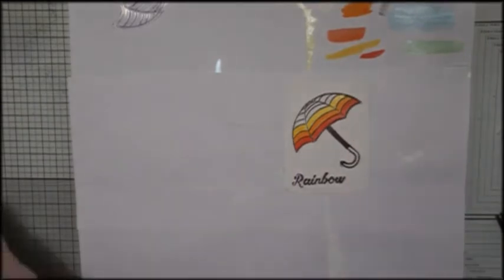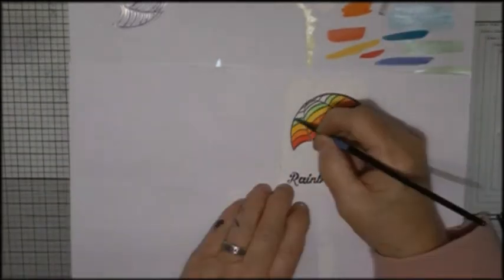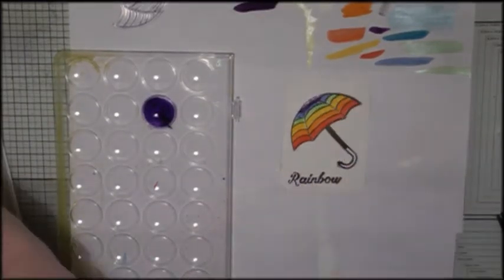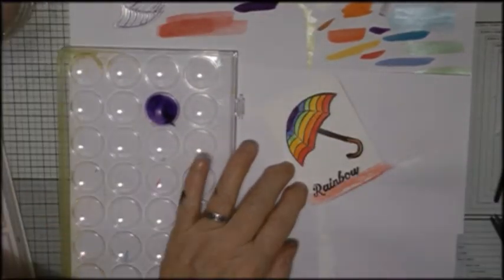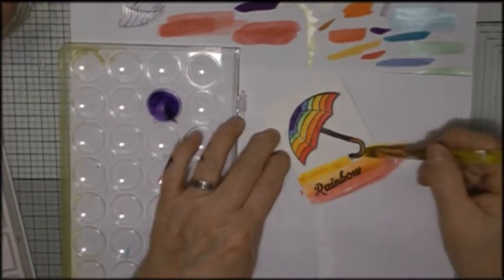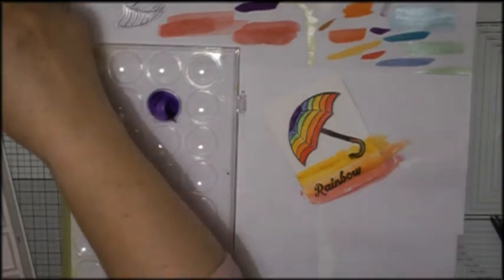And now I'm coloring in the umbrella with colors of the rainbow. Again, I'm using Artislop paint, but not the shimmer ones this time. When I'd finished painting this, I decided it was a bit too plain, and so I decided to put a rainbow background on it as well.